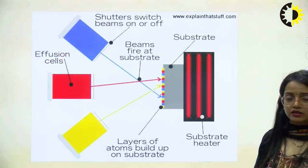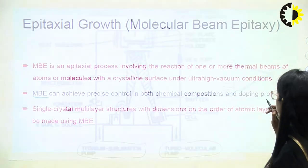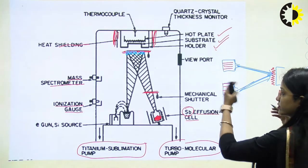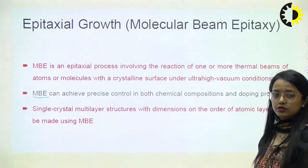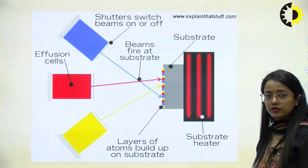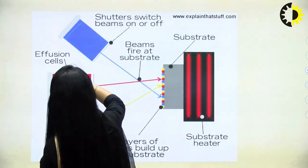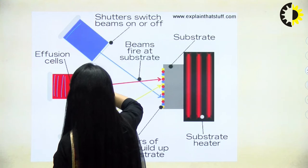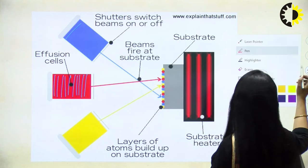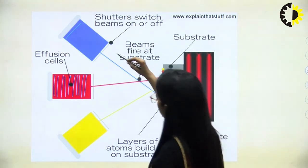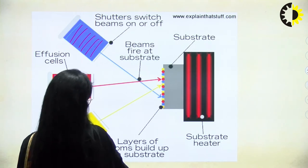Here is another prototype of molecular beam epitaxy. The effusion cells are on the left side and the substrate which needs to be layered with the epitaxial layer is on the right side. This effusion cell will be having the liquid or material which we want to fill up, and we can have different materials.